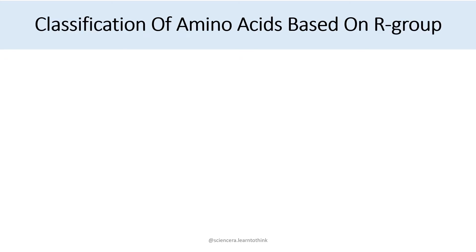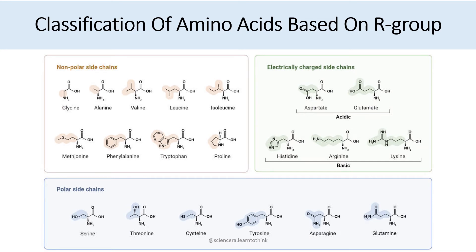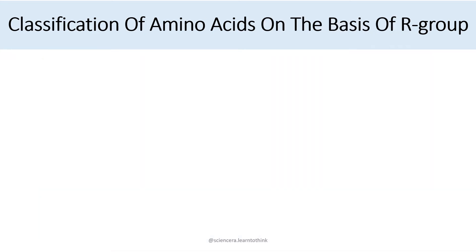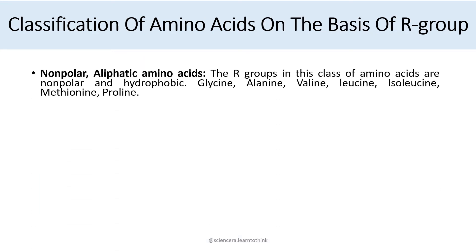Classification of amino acids based on R group — the R group is the side chain. They include non-polar side chains, electrically charged side chains (further divided into acidic and basic amino acids), and polar side chains. The first group is non-polar, also known as aliphatic amino acids.